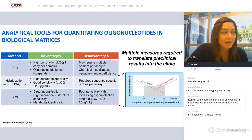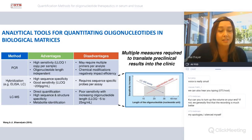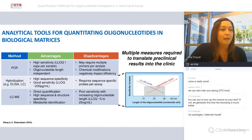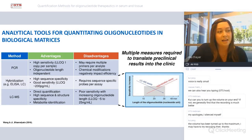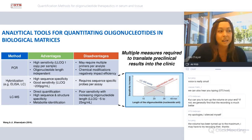Lastly, we have LC-MS, which allows for direct quantification with high sequence structure and specificity and metabolite identification. However, if we're working in biological matrices, we suffer from poor sensitivity. The figure to the right compares sensitivity versus length of oligonucleotide sequence, showing the inverse sensitivity relationship between LC and hybridization. The main take-home from this slide is that there isn't one assay which captures everything we need for quantifying oligonucleotides, and most of the time we need multiple means to translate pre-clinical results to the clinical.